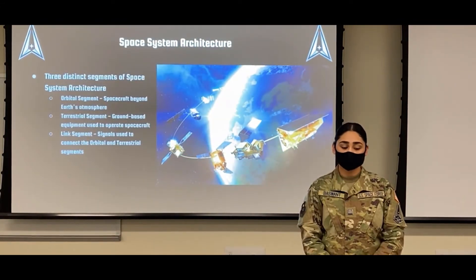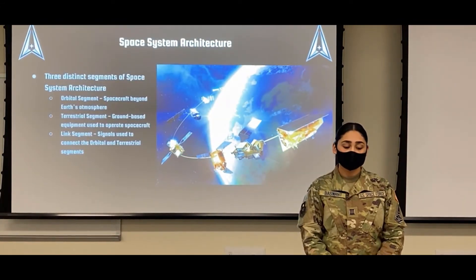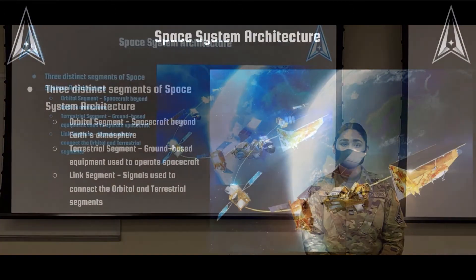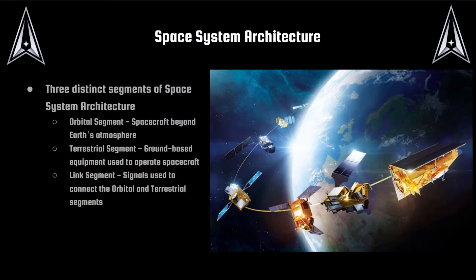Moving into space system architecture: there are three distinct segments. The first is the orbital segment, which encompasses spacecraft beyond Earth's atmosphere. The second is the terrestrial segment, which is ground-based equipment used to operate spacecraft. The third is the link segment, which are signals used to connect the orbital and terrestrial segments. All three segments are integral to space system architecture, as all three are needed for mission success.